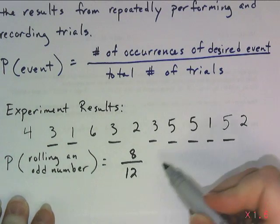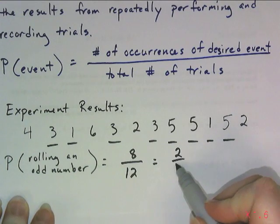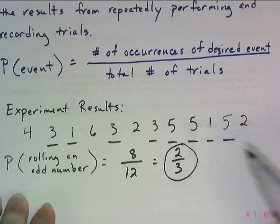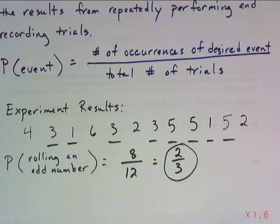Again, I look, and this can be simplified. Eight twelfths can be simplified to two-thirds. So based off of my experiment, I have a two-thirds chance of rolling an odd number with the specific die that I'm working with.